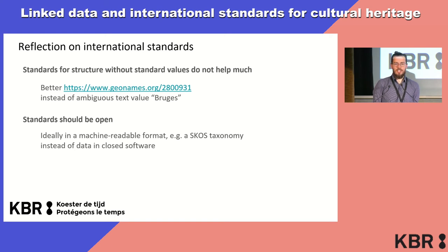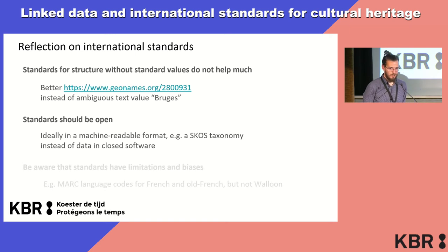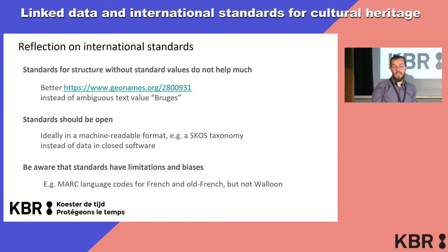Standards should be open, ideally in a machine-readable format — for instance, a cross-taxonomy rather than data in a closed format. Some things like the Rameau or KB codes are all online and available. But something like the Universal Decimal Classification requires you to be a member of some organization and is difficult to find online — at least I couldn't find it. We should also be aware that standards have limitations and biases. For instance, for the MARC language codes there exists one for French and Old French, but something like Walloon — a specific dialect — is not indicated in this standard. If your research focuses on specific comics written only in a specific dialect, the standard helps a bit in that you know it's French, but then you have to do some manual filtering afterwards.